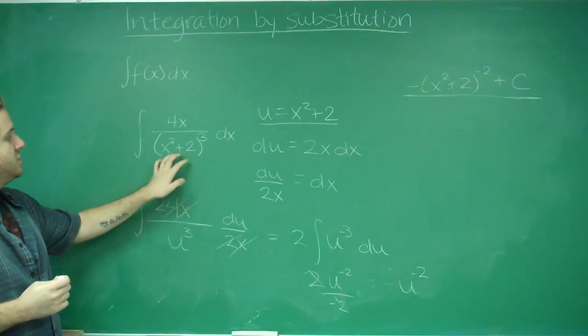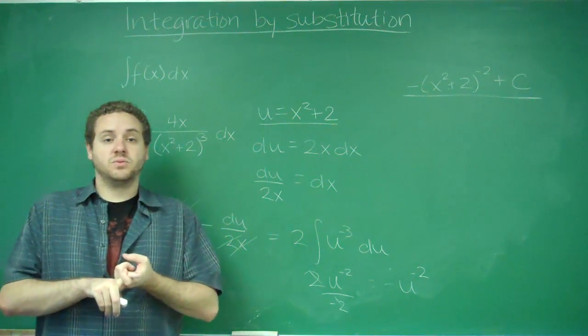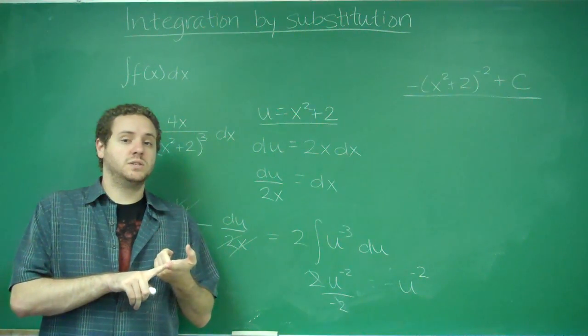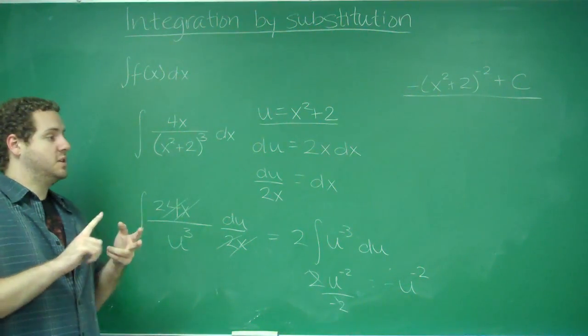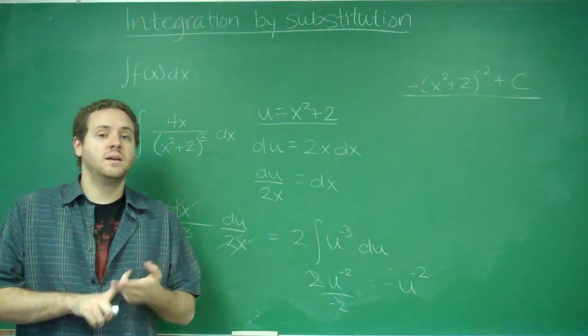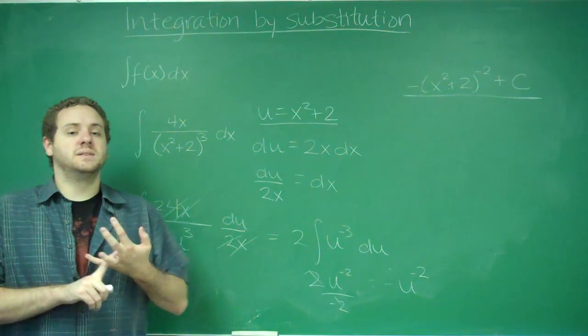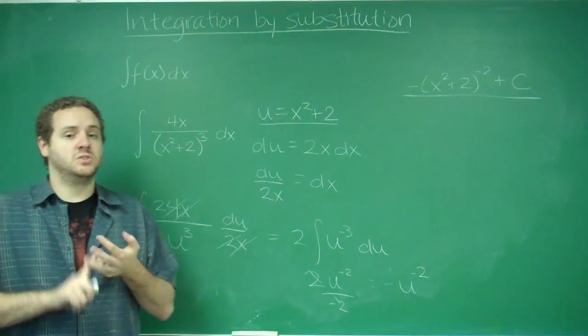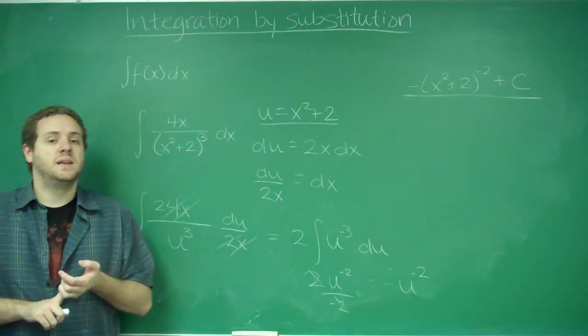When you're choosing what you want to call u, look for something that its derivative is also somewhere in the function. You want to include any additions and subtractions of constants that you can, and you want to just use the bases of things that are raised to powers and don't include the exponent in the u.